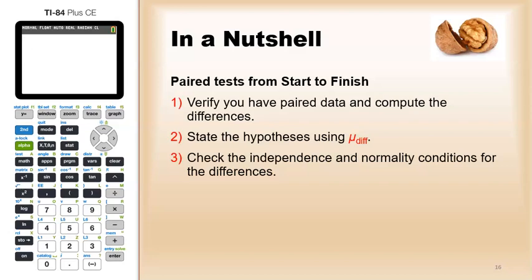From there we'll check the independence and normality conditions for the differences. So we want to make sure that things are done randomly, random selection or random assignment, and we also want to make sure that we have at least a sample size of 30 or there's no real outliers.